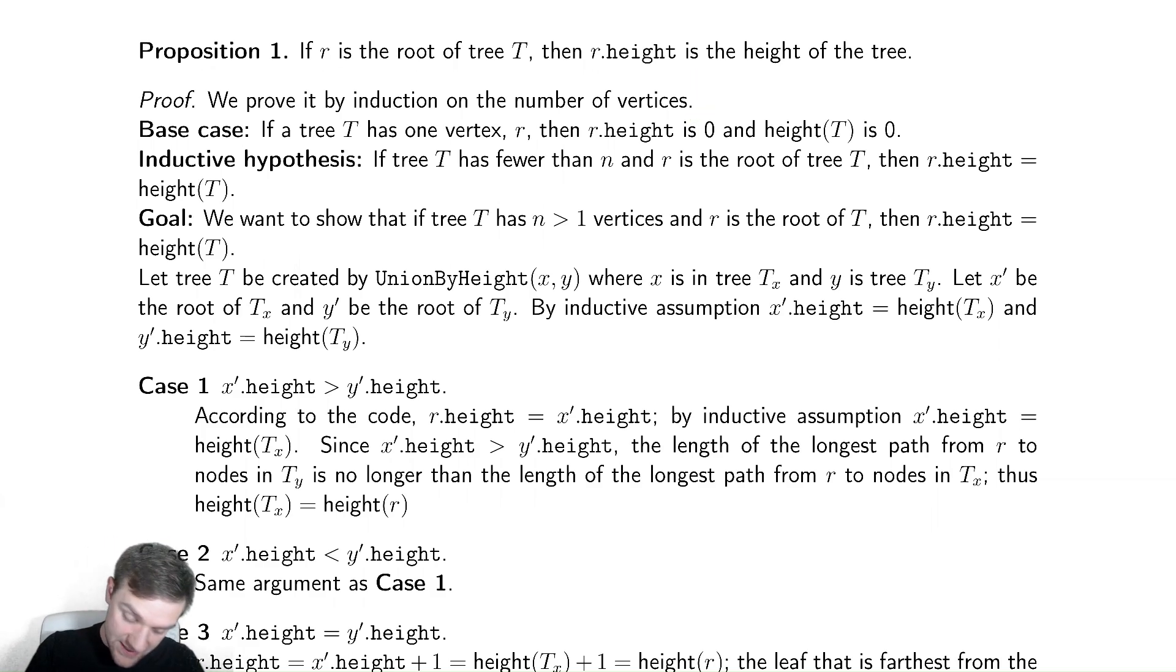Our base case is going to be that the tree has one vertex, which has height zero, and our height starts at zero, so we're good. Nice and easy, very straightforward. Our inductive hypothesis is that if we have fewer than n nodes and r is the root of the tree, then r dot height is the height of the tree. Very straightforward, just assume that the variable represents what we're claiming it represents.